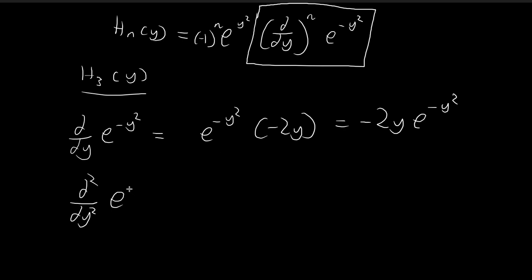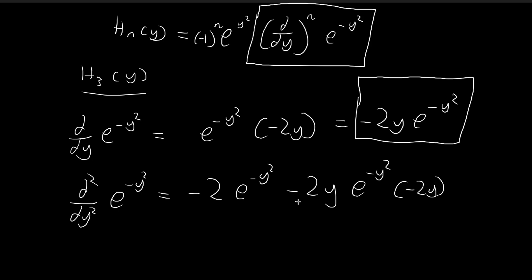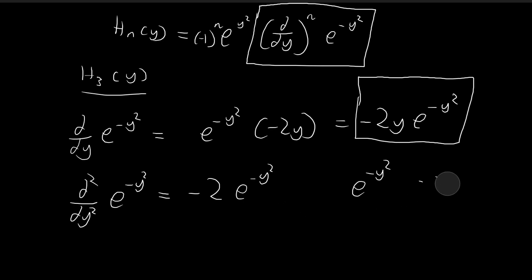Moving on to the second derivative, we differentiate this expression using the product rule. We differentiate the first factor, which becomes negative 2, and retain the second term. Then we retain negative 2y and differentiate e to the power of negative y squared using the chain rule, bringing down another negative 2y. Combining these two terms gives positive 4y squared, so the second derivative is negative 2 plus 4y squared, times e to the power of negative y squared.